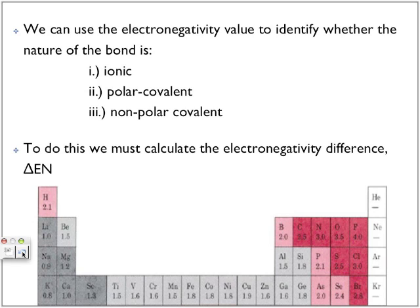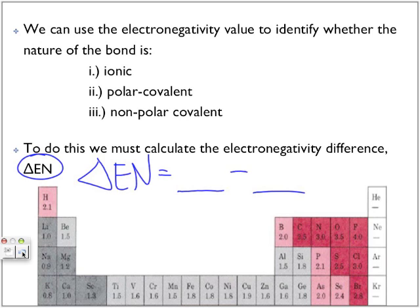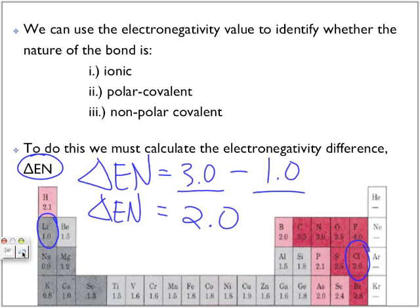We can use electronegativity values to identify the nature of the bond — whether it's ionic, polar covalent, or non-polar covalent — using electronegativity numbers from the periodic table. We do this by finding the electronegativity difference: you take the electronegativity of one atom and subtract it by the electronegativity of the other. For example, with lithium chloride, chlorine is 3.0 and lithium is 1.0, giving us a change in electronegativity of 2.0. But what does that mean?